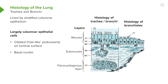The cilia are protein structures which allow mucus to move back up the airways and out of the lungs, and that is a primary immune mechanism for defending the lung against anything that is inhaled that should not be there.